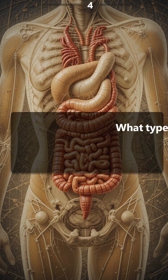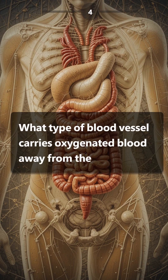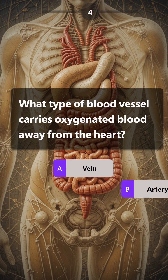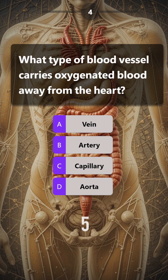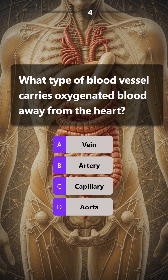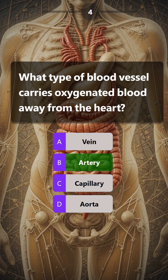What type of blood vessel carries oxygenated blood away from the heart? Vein, artery, capillary, aorta. Answer is: artery.